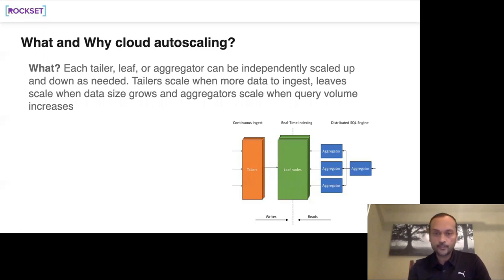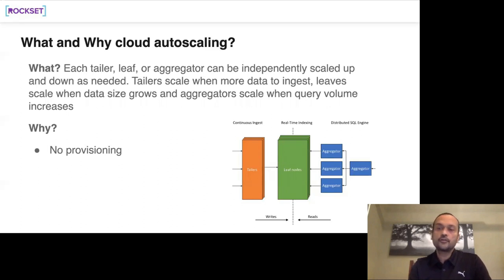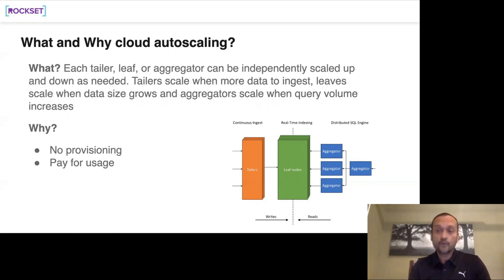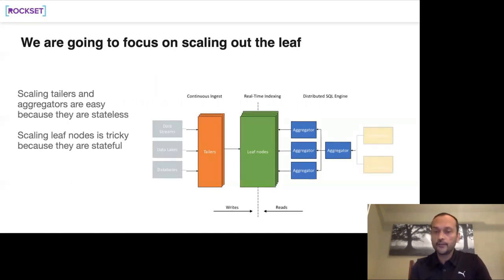When data comes in, tailors extract and serialize data. If there's high write volume, we scale up tailors — pure compute, easy to scale. When more data needs to be stored, we scale up leaf nodes. When more queries arrive, we spin up more aggregators to maintain query latency targets. No manual provisioning needed — we use AWS auto-scaling and Kubernetes auto-scaling policies. Scaling the leaf nodes is the hardest part because they're stateful, unlike the stateless tailors.